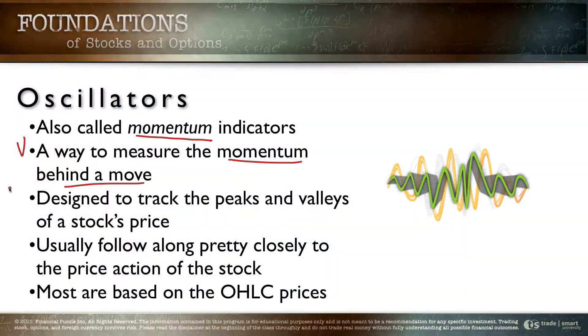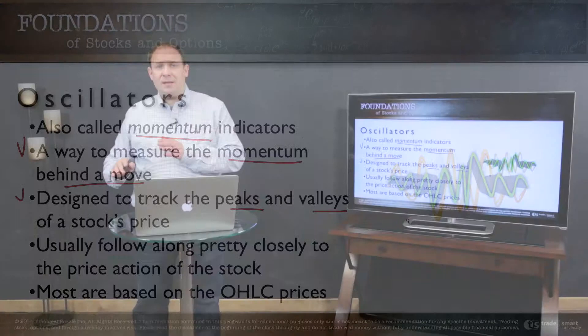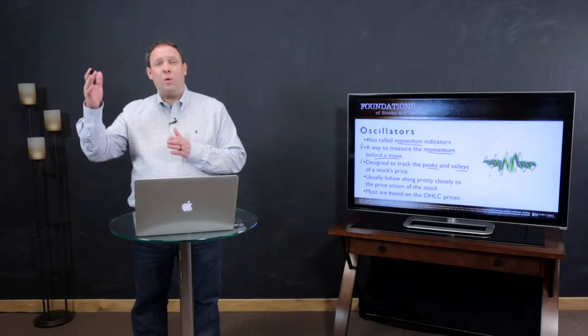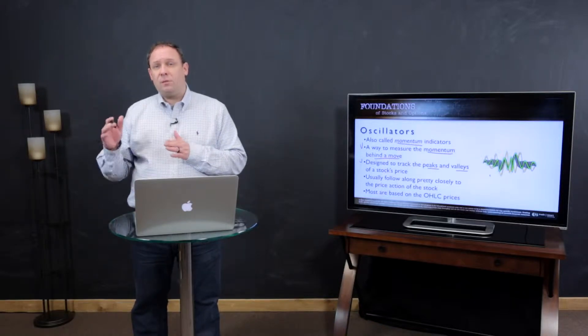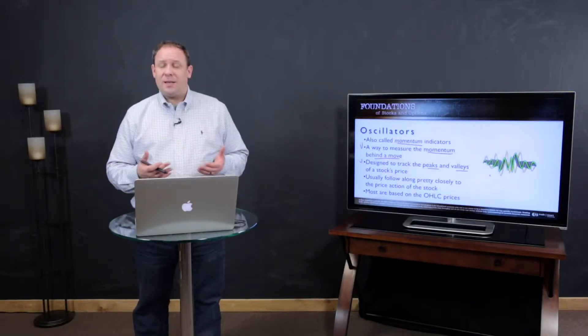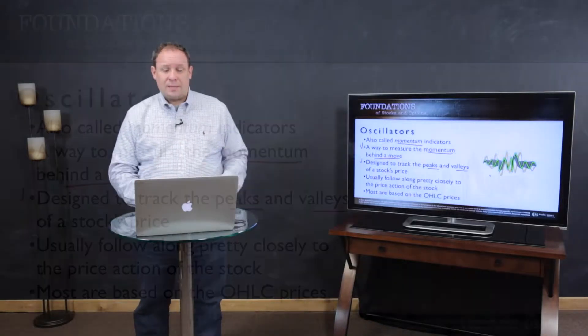Oscillators are best used as a way to measure the momentum behind a move, because they cycle — they oscillate back and forth. As the momentum is building, the oscillators will reflect that, and as the momentum is dissipating, they'll reflect that as well. They're designed to track the peaks and the valleys of a stock, and that's one of the reasons they give us great insight.